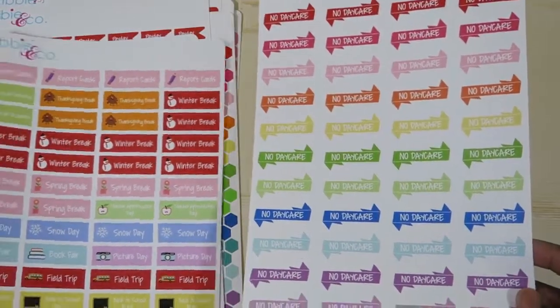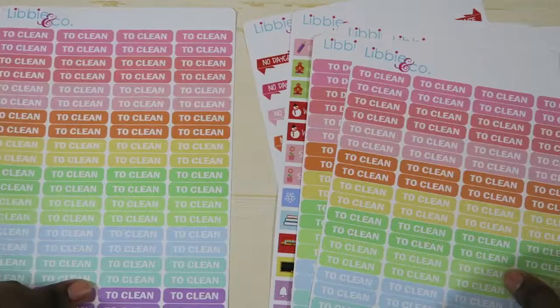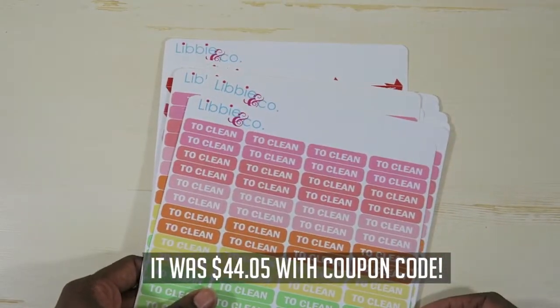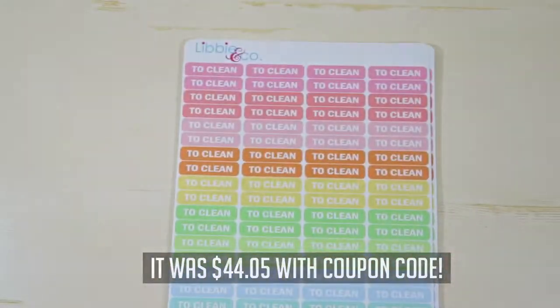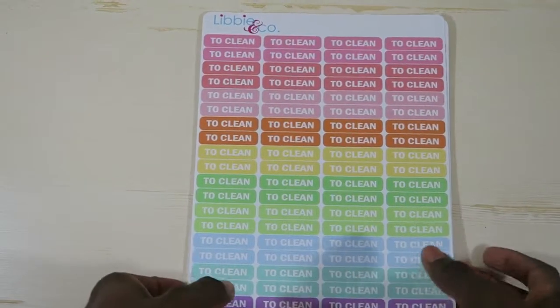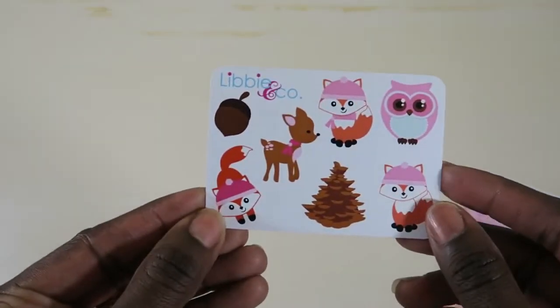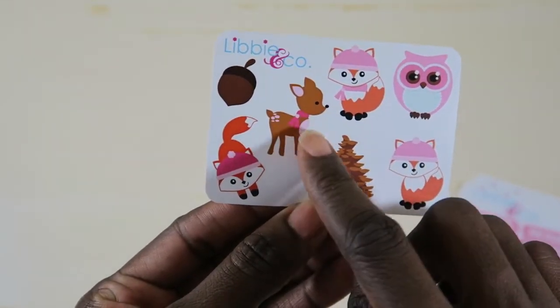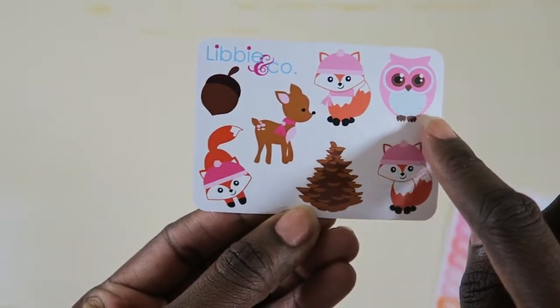And then no daycare—all functional. Each of these were $4.50. We have ten sheets, so I think it was around $55 or something like that. I'm gonna be splitting these with my friend. I also got these freebies—aren't they so cute? I love the little fox and then the deer and the owl.